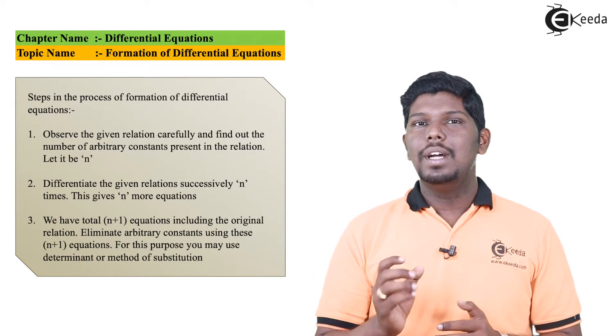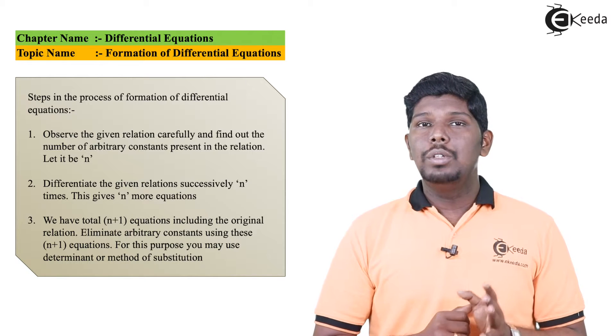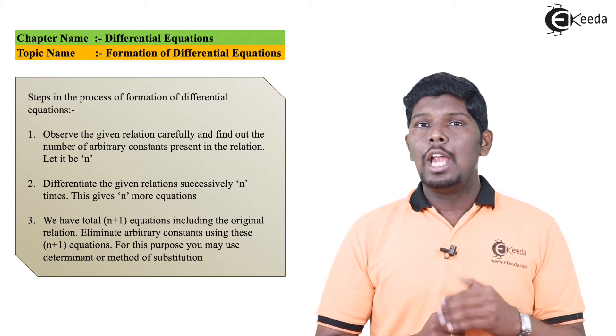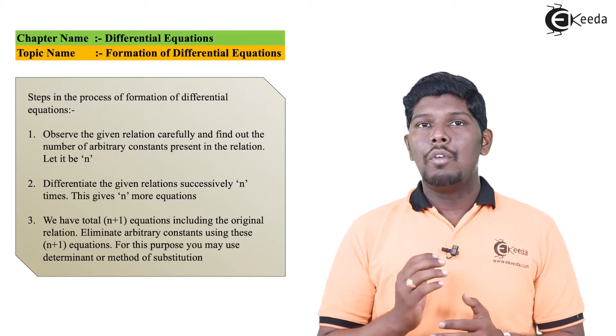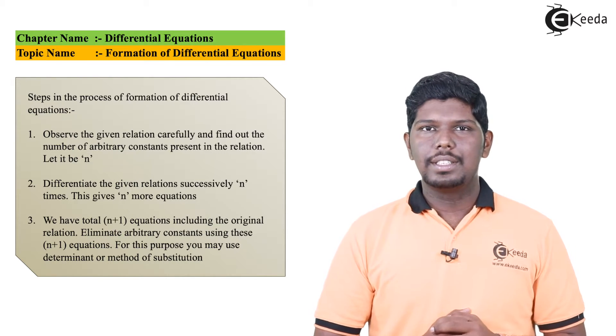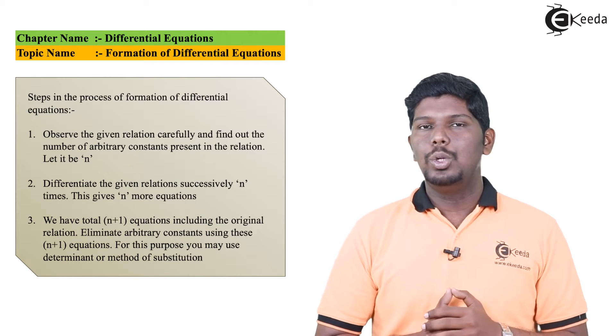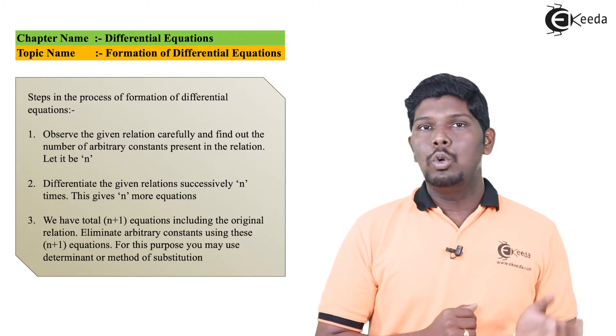Now let us see the steps that are required to form the differential equation. In point number one, we need to observe the relation carefully and calculate or count the number of arbitrary constants. Say we have n number of arbitrary constants. The second step is that differentiate this relation n times.